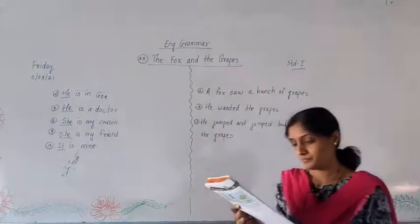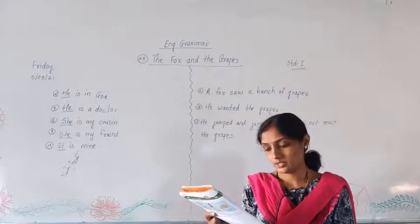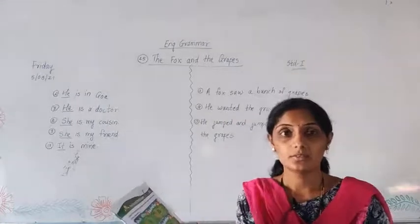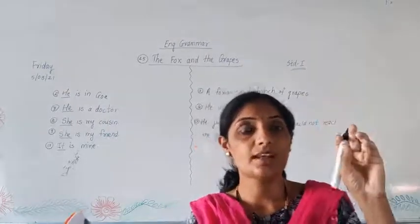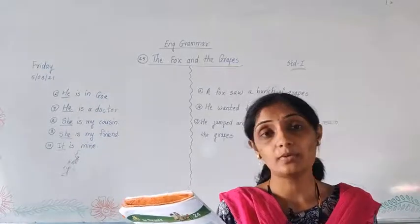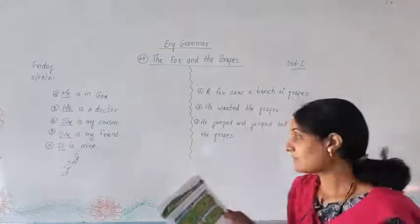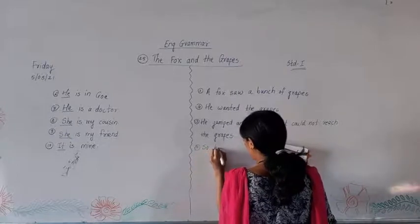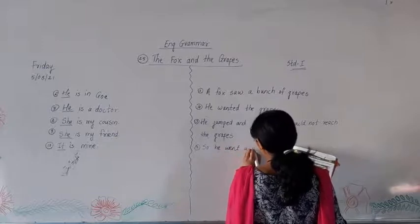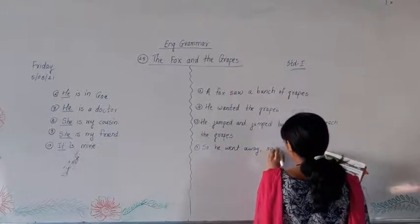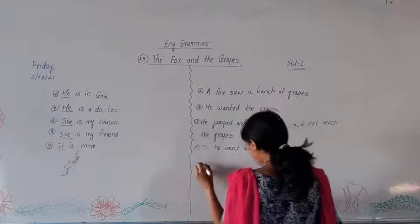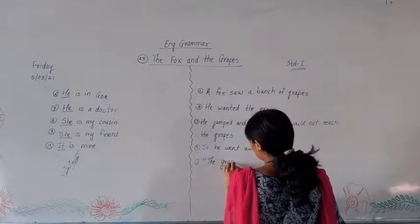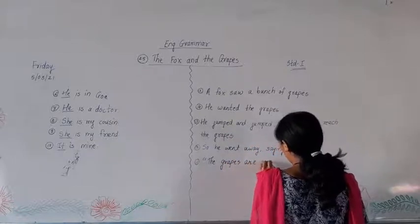Then, which will be next sentence? As he was not able to reach the grapes, when he was jumping, he was not able to touch grapes, and he wanted to remove them and eat them. But as it was not possible for him, then what he did? He went away saying, the grapes are sour. So, what will be next sentence? Fifth one. So, he went away, saying, what? What did he say? The grapes are sour.